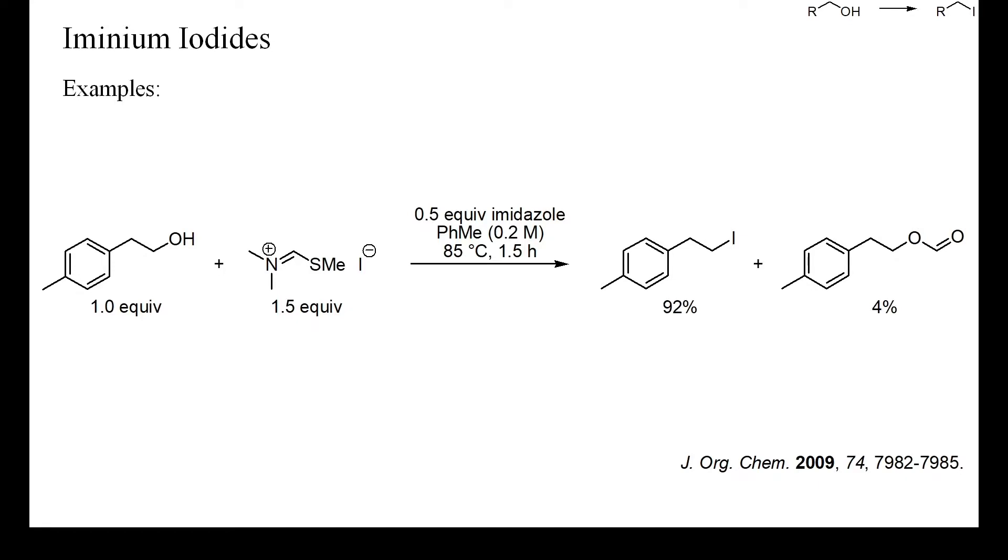In the example on this slide, a thioformamide-derived iminium iodide was used to convert a primary alcohol into the corresponding iodide. As by-product, 4% of the formic acid ester was obtained.